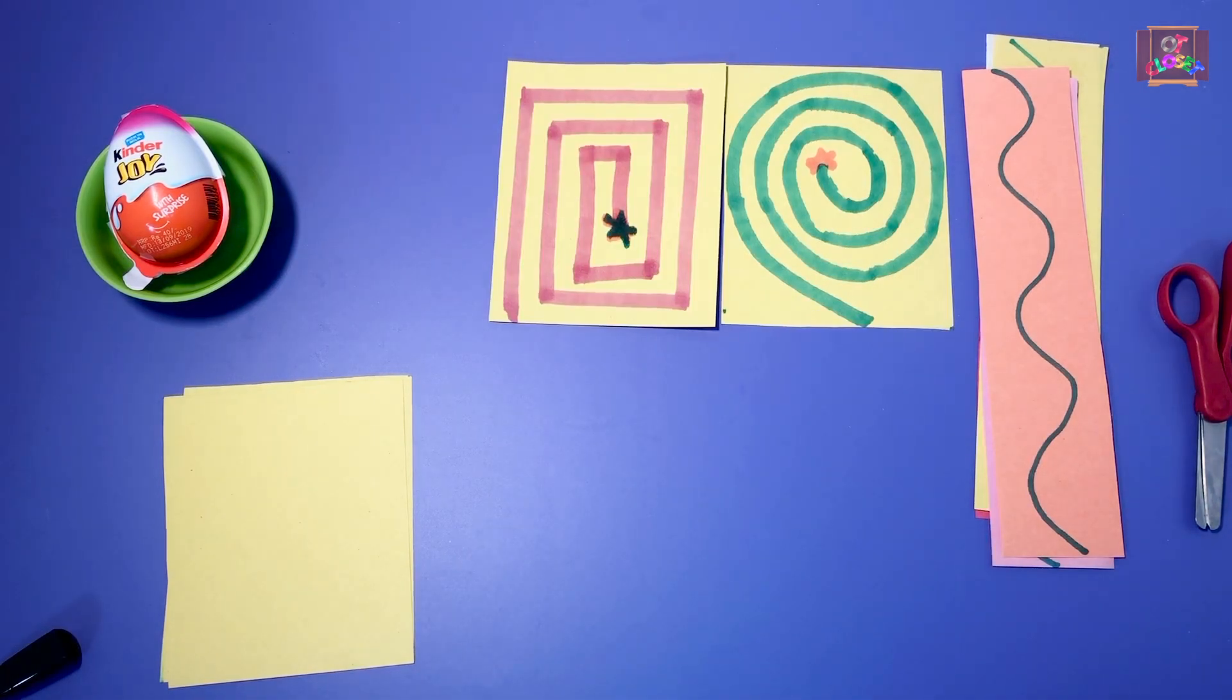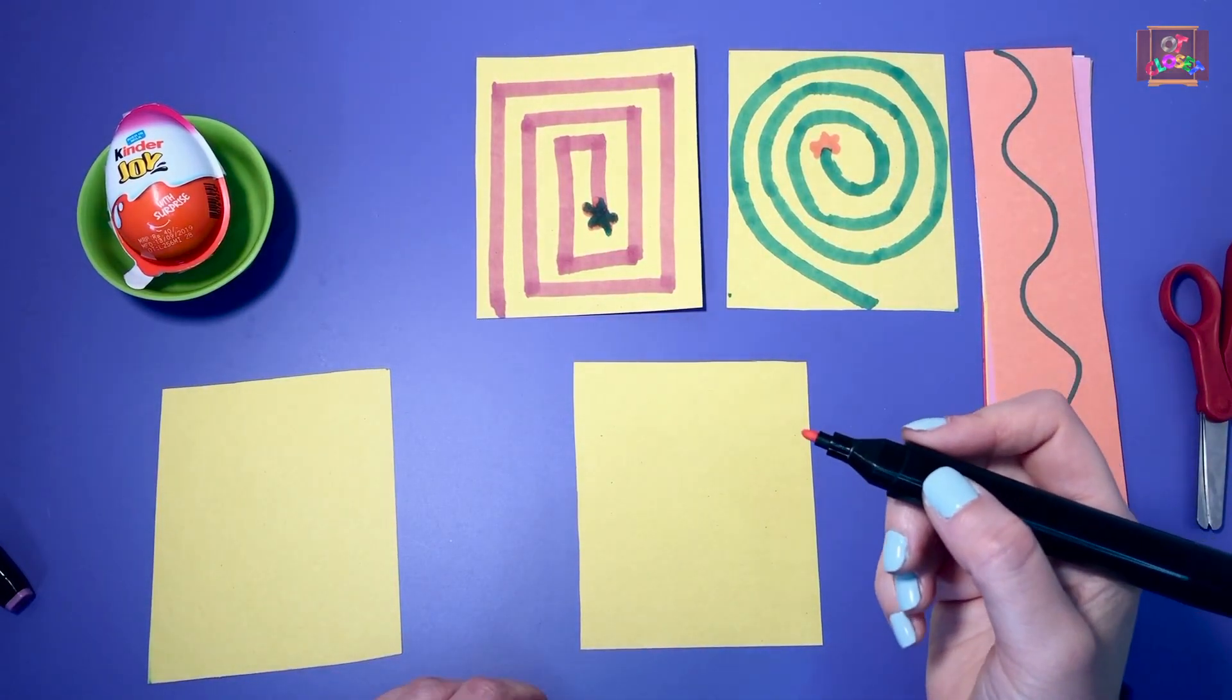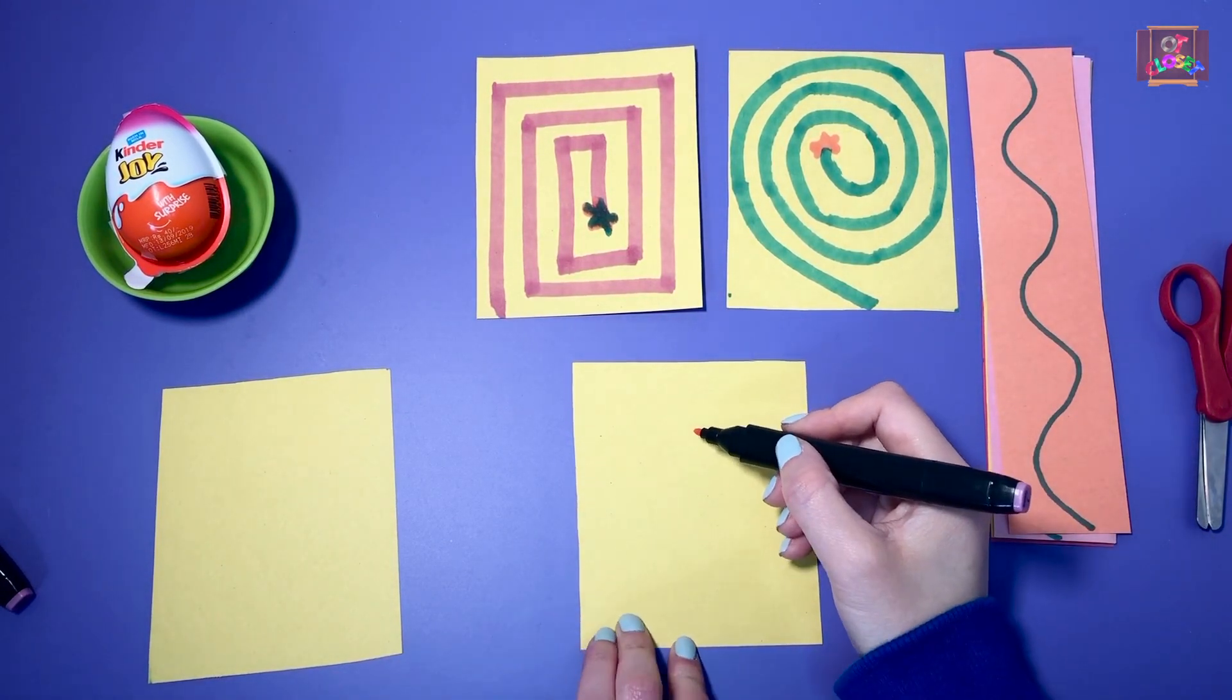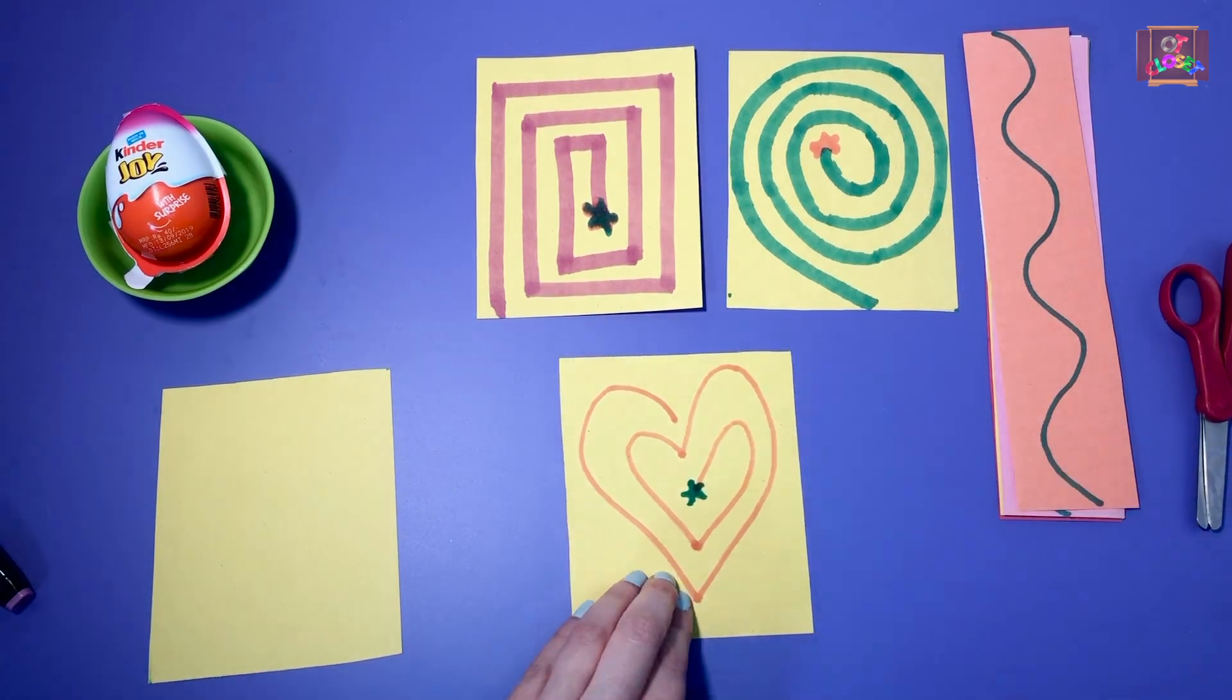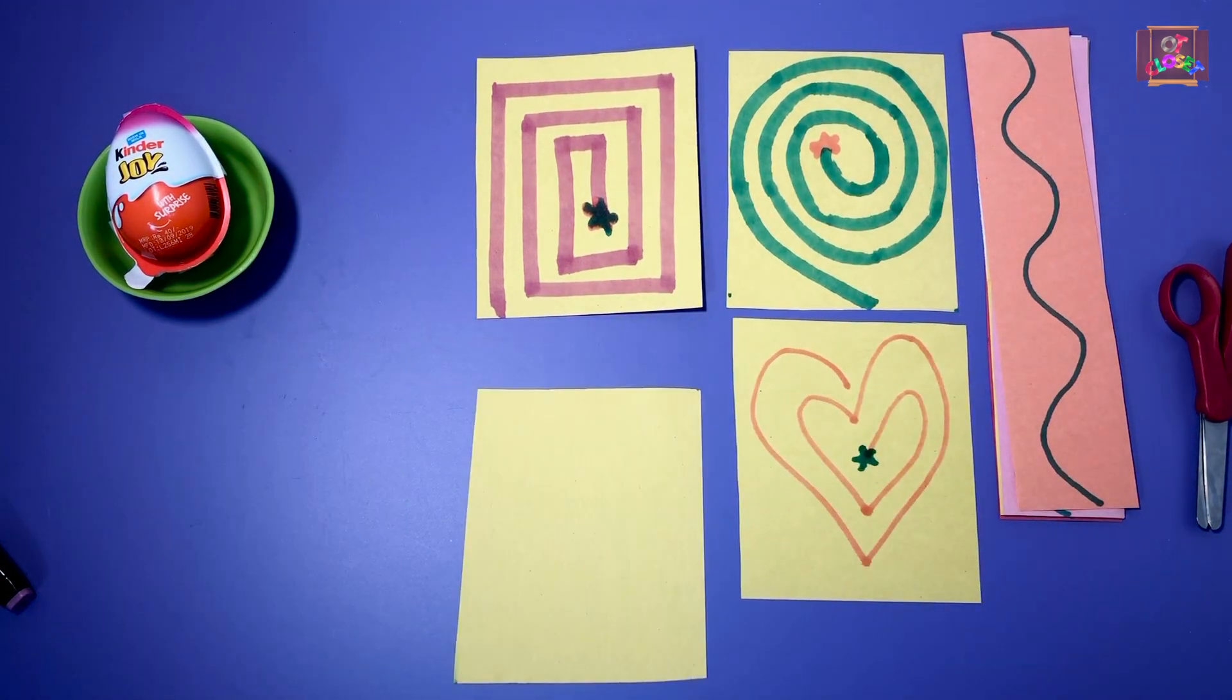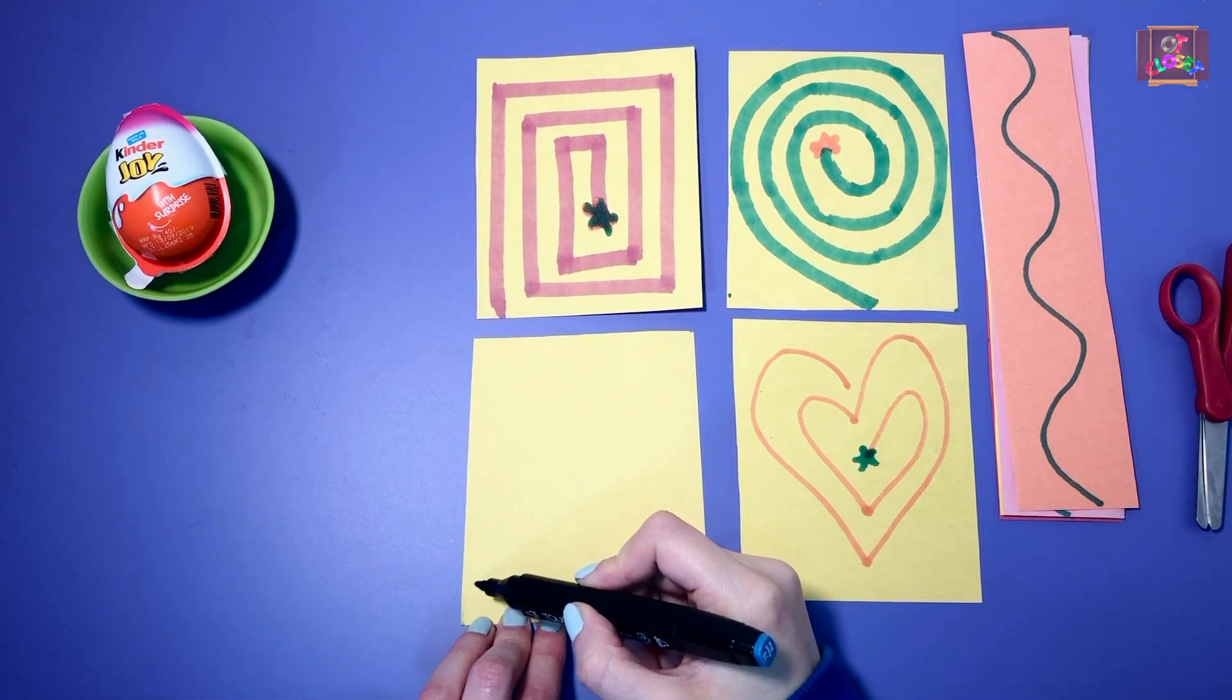Next we're gonna make a maze that looks like a heart. I'm going to use a pointy side now to add the challenge. Our last picture is going to be a shape of a triangle. To add the challenge, I'm going to use the pointy side again.